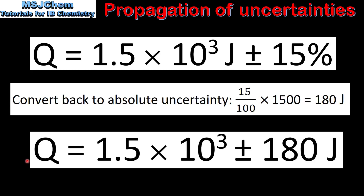So finally we can write our value of Q, the heat released in the reaction, as 1.5 × 10³ ± 180 joules. In this example, the absolute uncertainty is written to the same number of significant figures as our value for Q.